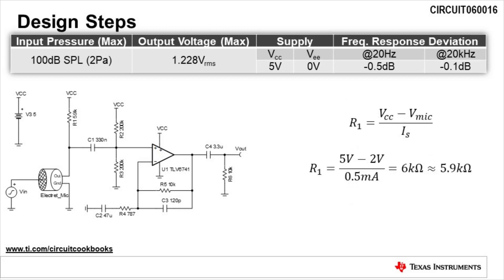The next design step is to calculate the bias resistor R1, which biases the microphone's internal JFET transistor to achieve a bias current specified by the microphone. R1 is calculated by VCC minus Vmic divided by IS, where Vmic is the microphone's standard operating voltage and IS is the current consumption of the microphone. R1 is calculated to be 6 kilo ohms. Since 6 kilo ohms is not a standard resistor value, we will use the next closest value of 5.9 kilo ohms, as shown in the schematic.